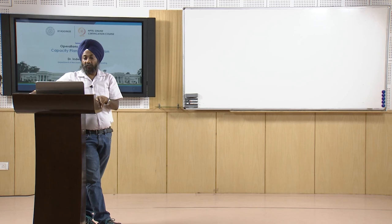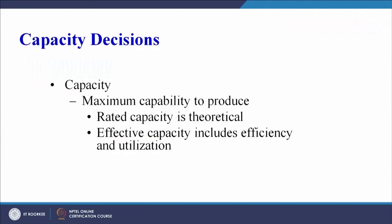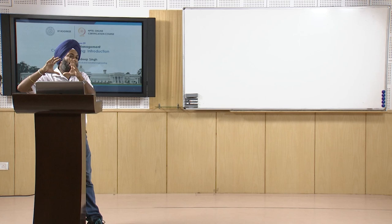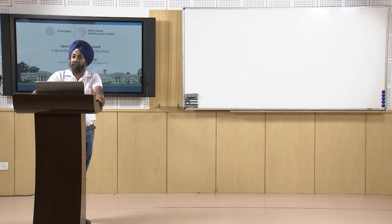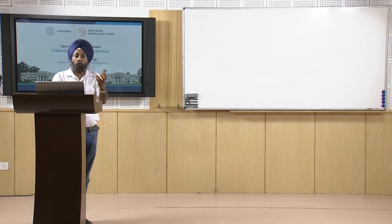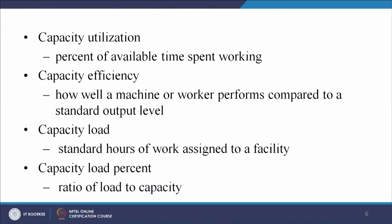Based on the capacity utilization rate, we can determine the theoretically best capacity available and how much we are utilizing — our efficiency. We can then try to improve efficiency and effectiveness by making major decisions or modifications in our procedures to improve the capacity utilization rate for equipment or services.